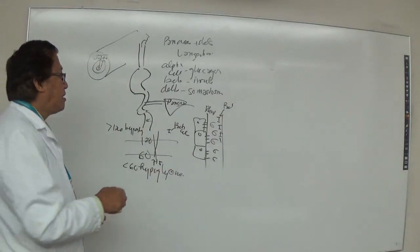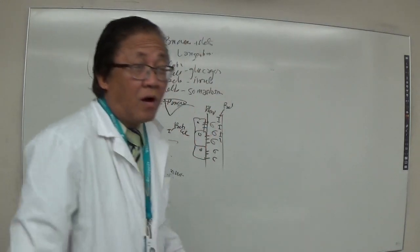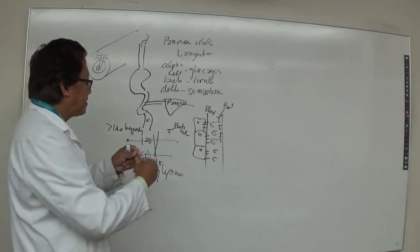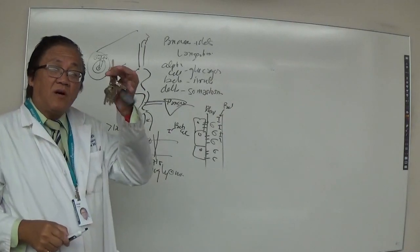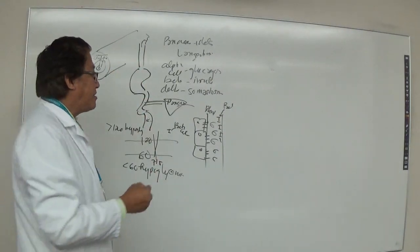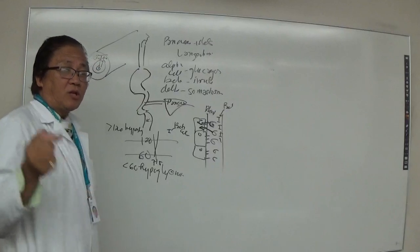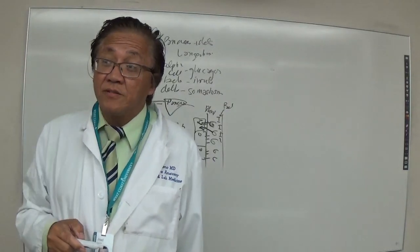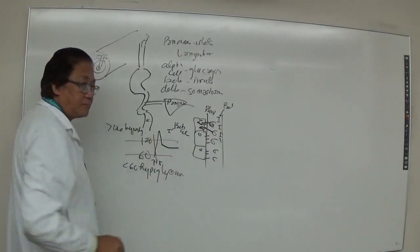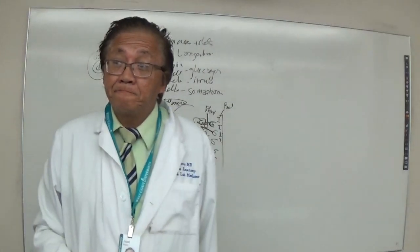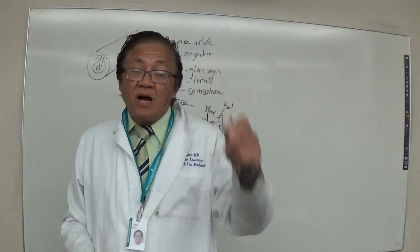Insulin acts as a key that opens the door of the cell membrane. When the door opens because of insulin, glucose enters the cell. The moment glucose enters the cell, blood glucose levels start to drop from 200 back to normal levels.